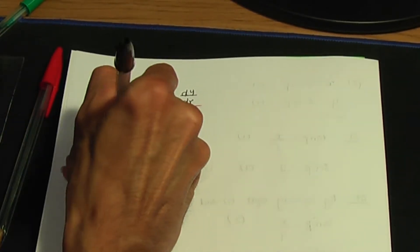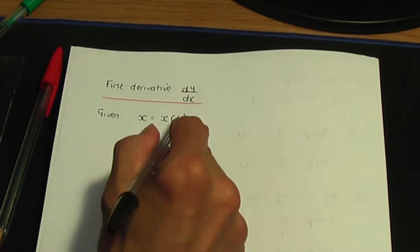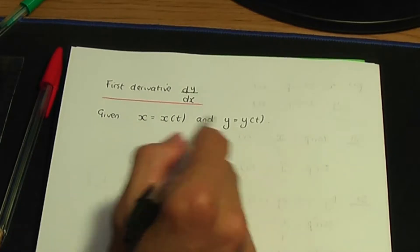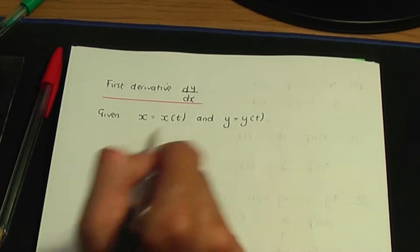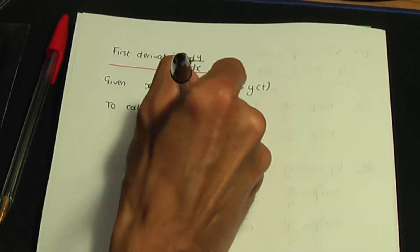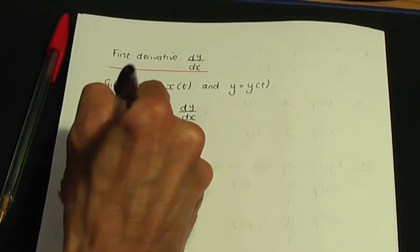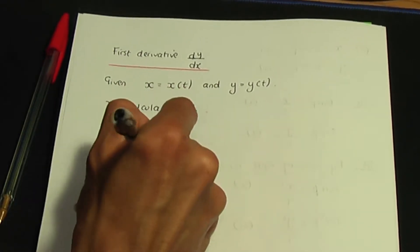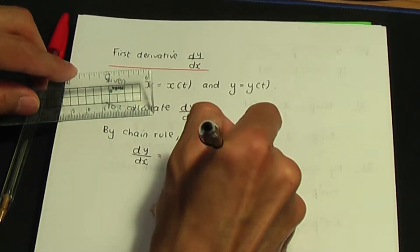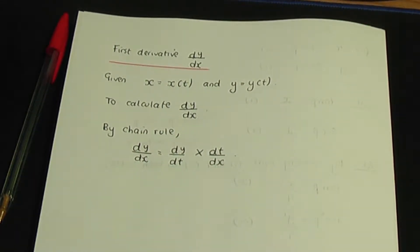So if you're given parametric equations — x in terms of a third variable t, and y in terms of a third variable t — to calculate dy over dx, the first derivative, we need to use the chain rule. By the chain rule, dy over dx equals dy over dt multiplied by dt over dx.